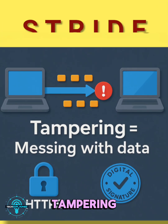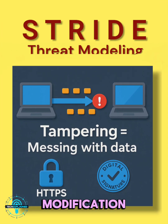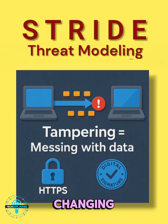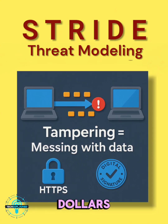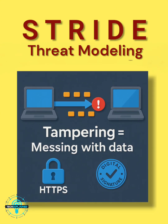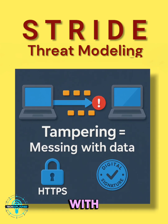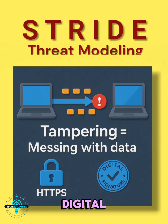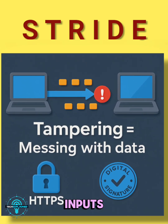Tampering is unauthorized modification of data, like someone changing a check from $100 to $1,000 before it's deposited. That breaks integrity, mitigated with encryption, digital signatures, and validating inputs.